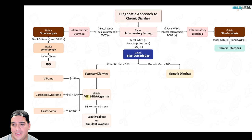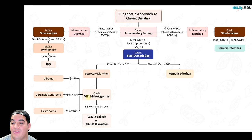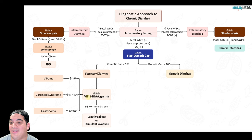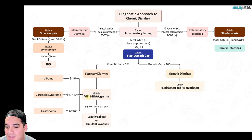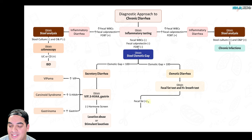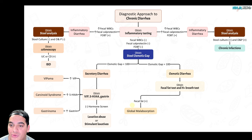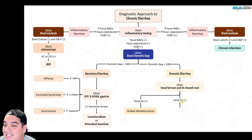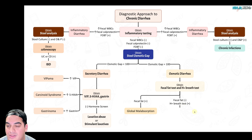For osmotic diarrhea workup, first determine if there's fat malabsorption or maldigestion. Get a fecal fat test and hydrogen breath test. If the fecal fat test is positive, it points to global malabsorption — think celiac disease, tropical sprue, Whipple's disease, or exocrine pancreatic insufficiency.